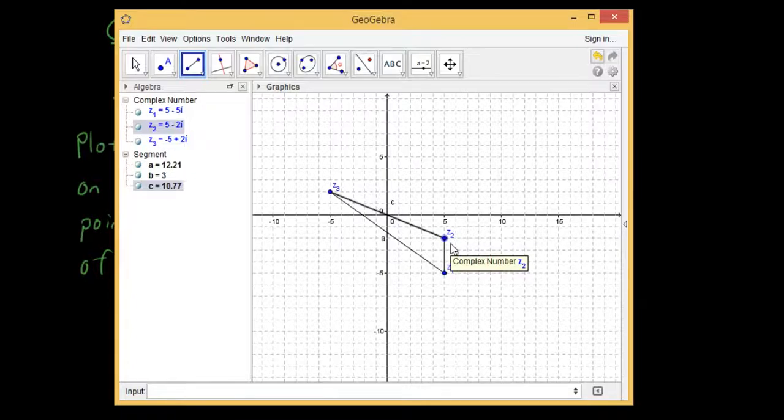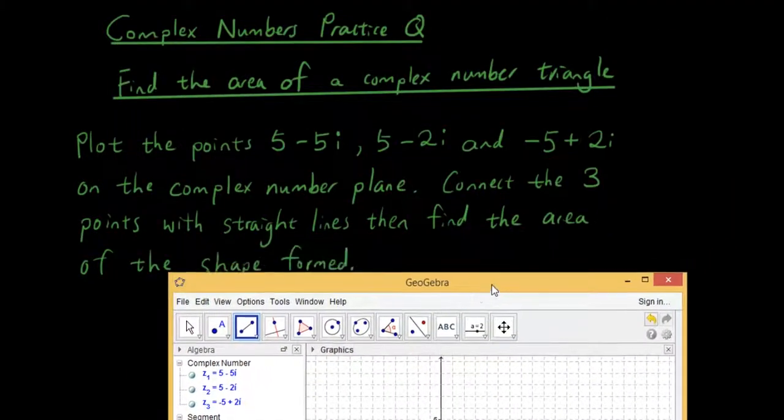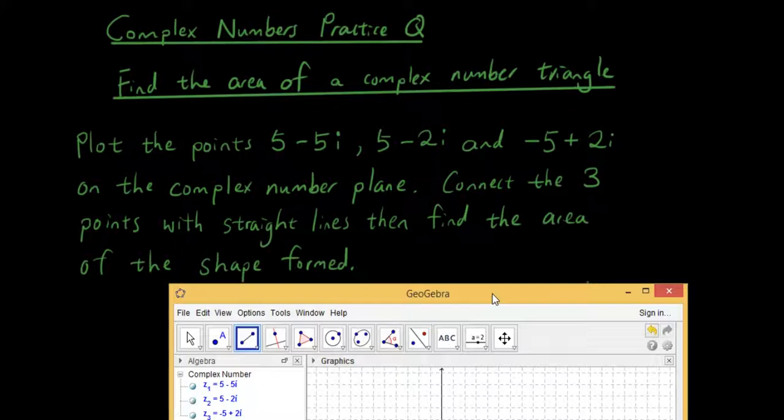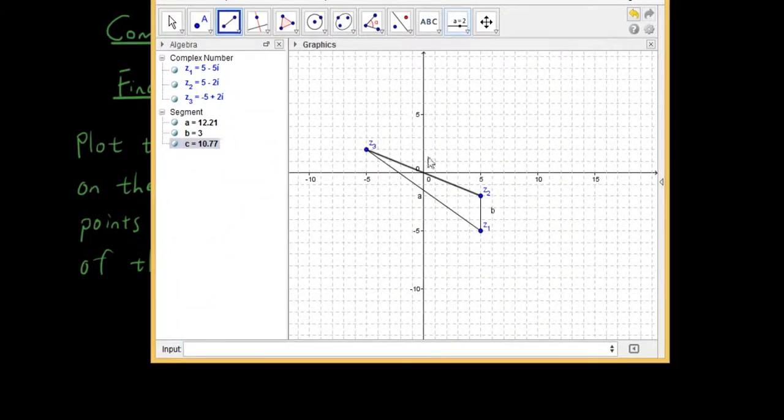And now we want to find the area of this shape formed. So we want to find the area inside this shape. And because it is a triangle, the area of the triangle is base times perpendicular height.